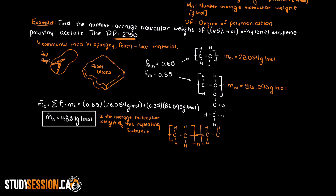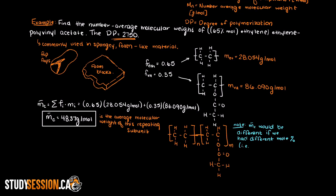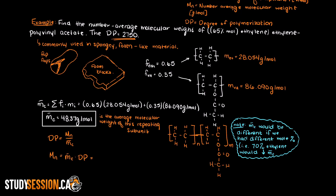Since we know the degree of polymerization for this copolymer, we can now easily find the number average molecular weight, and we determined this to be 2418.33 g per mole.